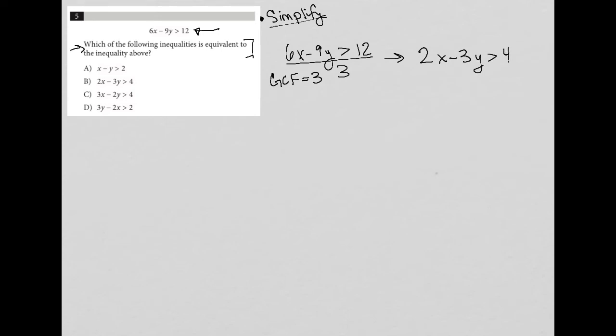Now, the question asks which of the following inequalities is equivalent to the inequality above. So simplifying this by factoring out the GCF is definitely going to get me an equivalent inequality. And what I see here is that this answer is listed as choice B. So in this case, B is the correct answer.